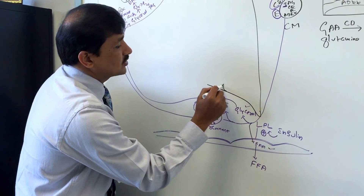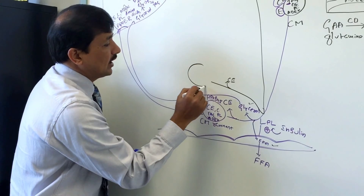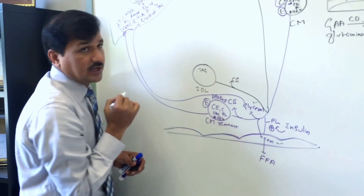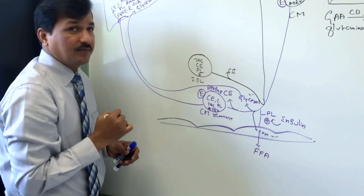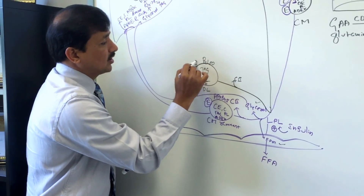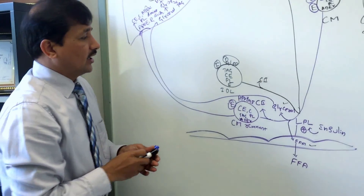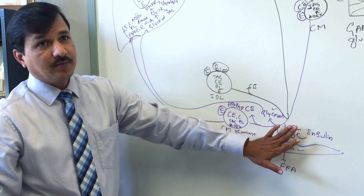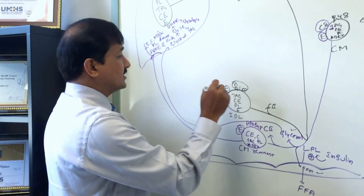At some point, ApoC2 is released and goes back to HDL — at that point, the molecule is called IDL, intermediate density lipoprotein. IDL still has some triacylglycerol, cholesterol ester, phospholipid, vitamin E, ApoB100, and ApoE. Since ApoC2 has been released back to HDL, the molecule is no longer catalyzed by lipoprotein lipase.